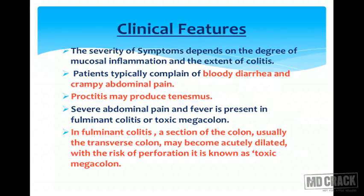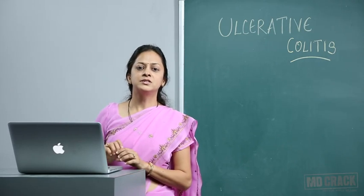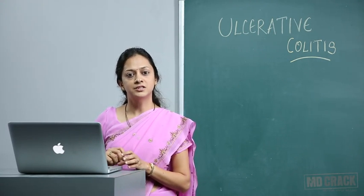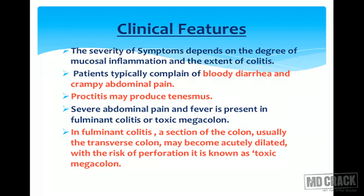In clinical features, the severity of symptoms depends upon the degree of mucosal inflammation and the extent of colitis. Patients typically complain of bloody diarrhea and crampy abdominal pain. Proctitis may produce tenesmus — crampy abdominal pain basically seen when the left-sided colon and rectum are involved. Severe abdominal pain and fever are present in fulminant colitis and toxic megacolon.